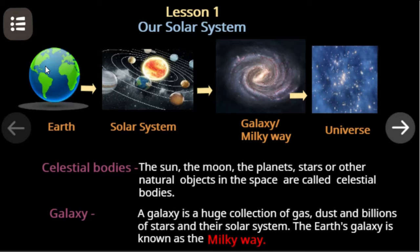There are billions of galaxies in our universe. Our galaxy, the Milky Way, is one of them. A galaxy is a huge collection of gas, dust, and billions of stars and their solar systems. Our galaxy, the Milky Way, contains our solar system.